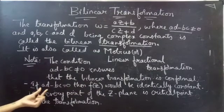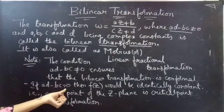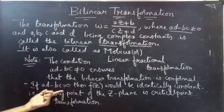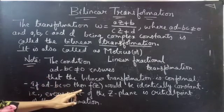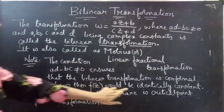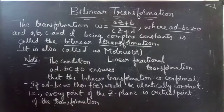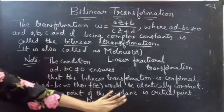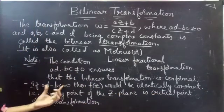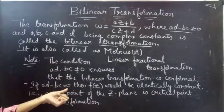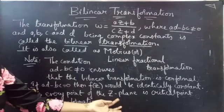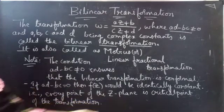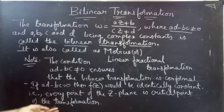If AD minus BC equals 0, then f(z) would be an identical constant, which means every point in the Z-plane is a critical point of the transformation.